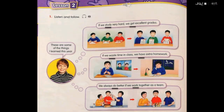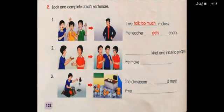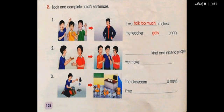Activity number two: Look and Complete. We will join the pictures to make one sentence. Question number one: If we talk too much in class, the teacher gets angry. If plus present simple 'talk' plus present simple 'gets' — that's correct.